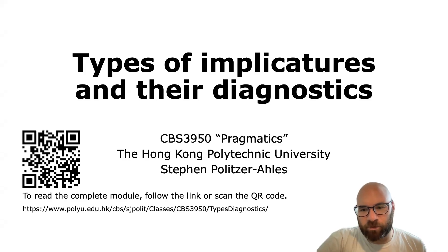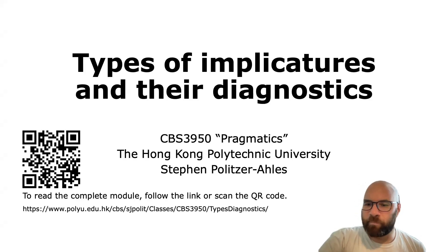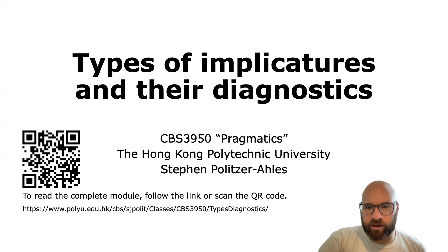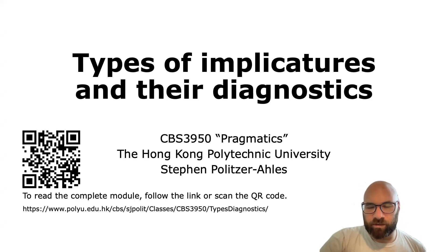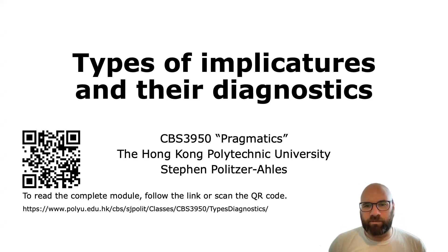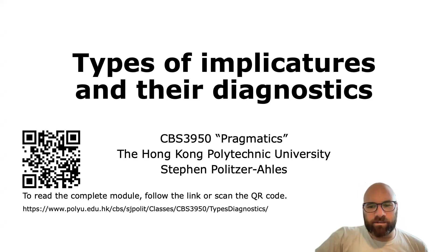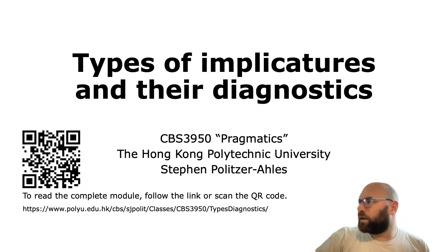Here comes one of our trickiest but most important modules. We're going to talk about some different kinds of implicatures. An implicature is anything that we express without literally saying it. When Grice originally introduced this term, he used it to mean any kind of extra meaning that goes beyond what is said. There are many different kinds of this extra meaning, so we need some way to categorize them and some tests to tell the difference between them.